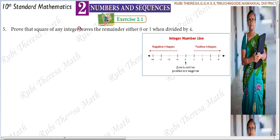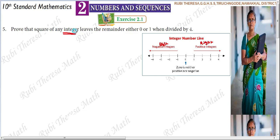First, what is an integer? If you look at the number line, 0 is in the middle. Everything on the right side of 0 are positive integers, and everything on the left side are negative integers. So both positive and negative numbers will be there — if you pick any positive integer or any negative integer.